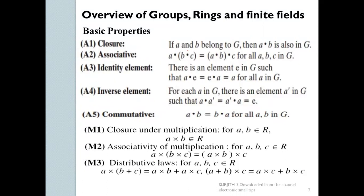We already have a review of the properties, so we will get a revision. We have to cover the properties. For example, the closure property. The first property is the closure property. A and B are elements of a group G.